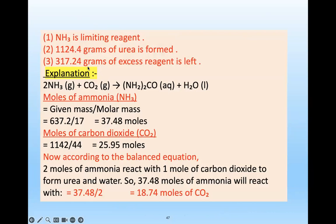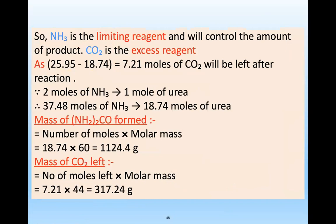The amount of product formed is controlled by the limiting reagent (NH3 — 18.74 mol urea). CO2 is the excess reagent. The excess CO2 remaining = 25.9 − 18.74/2 mol, then convert to grams. Calculate the mass of excess CO2 using mass = moles × molar mass.